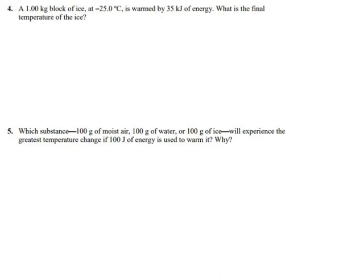Let's see what else we can do with this new formula of ours. We've got energy equals mass times specific heat times temperature change, and now they give us a block of ice. One kilogram block of ice at minus 25 degrees, warmed by 35 kilojoules of energy, and they're asking for the final temperature.